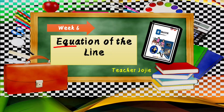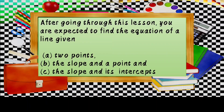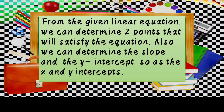Week 6 is all about Equation of the Line. After going through this lesson, you are expected to find the equation of a line given two points, the slope and a point, and the slope and its intercept. From a given linear equation, we can determine two points that will satisfy the equation, and also the slope, the y-intercept, and the x and y-intercepts.